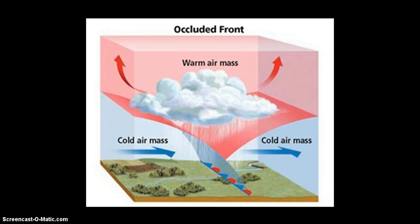Our fourth type of front is an occluded front — this is the one we will talk about the least. Essentially, what's happening here is we have a warm air mass caught between two colder air masses. Because that cooler air is more dense, it's pushing that warm air mass up into the sky. If we have warm air rising and cooling as it rises up into our atmosphere and it reaches its dew point, we're going to end up with condensation. You see that big cloud where the warm air mass is rising, and this could cause some cloudy, rainy, or snowy weather.